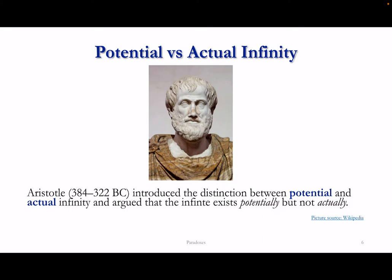Aristotle, the famous Greek philosopher, introduced a distinction between potential and actual infinity. He argued that the infinite exists potentially but not actually. By introducing this distinction and claiming that only potential infinity is legitimate, Aristotle could give a philosophical answer to the paradox of Achilles and the Tortoise, among others.